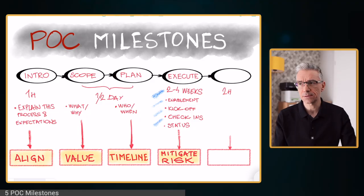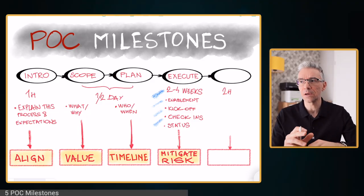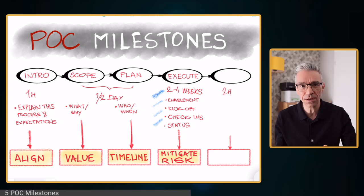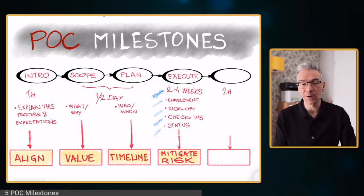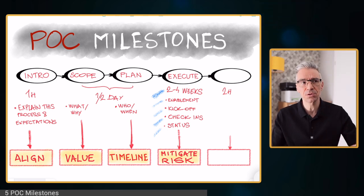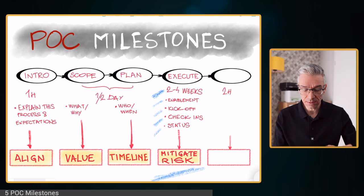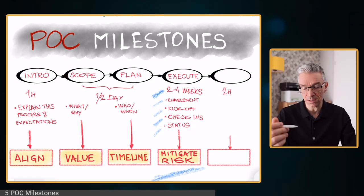Then what I do is regular check-ins, which can vary anywhere from a one-week cadence to a daily cadence, depending on how intensive and how much hands-on help the customer needs. I also like to have one or two status meetings where we meet with all the stakeholders of the POC to inform them where we are. All these activities serve to mitigate risk and make sure they are keeping to timelines and sticking to the deliveries and dates that we agreed on.